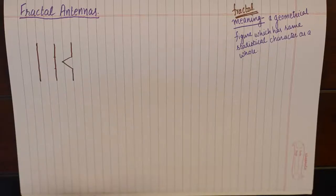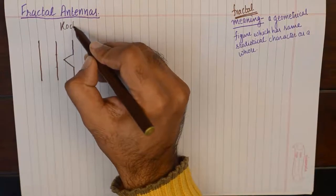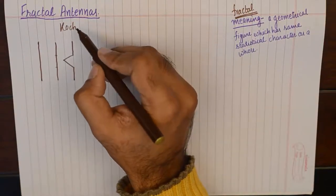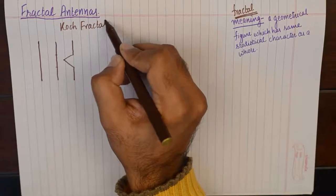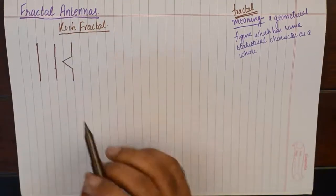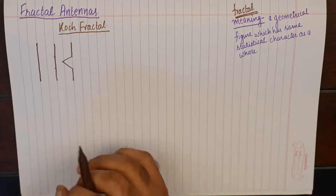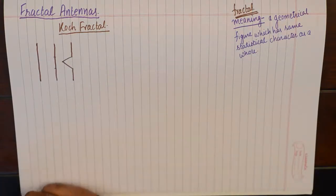I am taking up an example of a very popular fractal antenna which is the Koch fractal. This is the simplest and most basic kind of fractal antenna and it is derived from a λ/2 antenna.